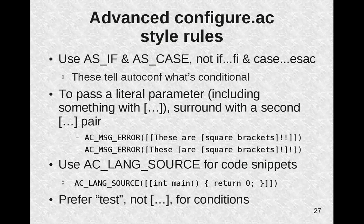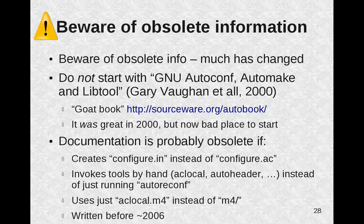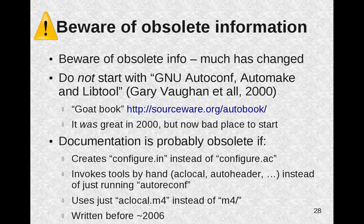You need to use AC_LANG_SOURCE to identify code snippets, and you should prefer the word 'test', not square brackets, for shell conditionals. Beware of obsolete information — there's a lot of obsolete information about the autotools and a lot has changed. In particular, don't start with the GNU Autoconf Automake or LibTool book, often called the GOAT book. It was a great book in 2000, but so much has changed that it's now a bad place to start. It's useful only after you've read other more modern information.